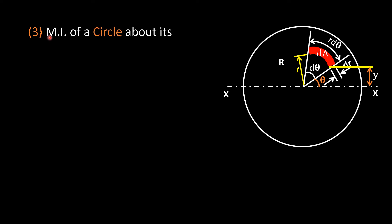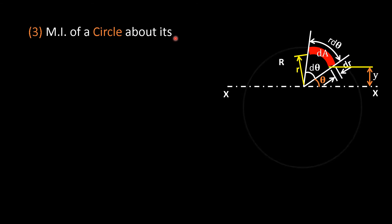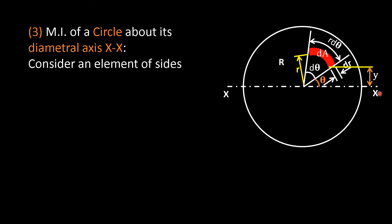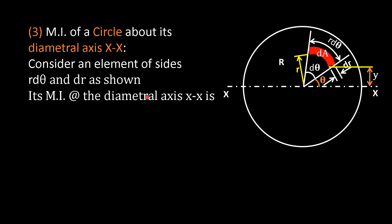Number three: moment of inertia of a circle about its diametral axis XX. Consider an element whose sides are r dθ (length of the strip) and dr (thickness of the strip). Its moment of inertia about the diametral axis XX is I_XX = y² dA.